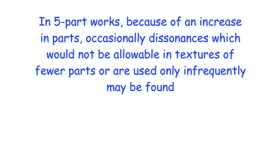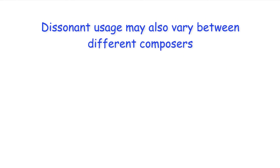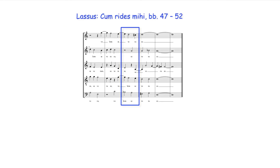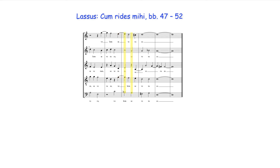In five-part works, because of an increase in parts, occasionally dissonances which would not be allowable in textures of fewer parts or are used only infrequently may be found. Dissonant usage may also vary between different composers. For example, Lassus here, to stagger these parallel fifths between the tenor and bass parts, sustains this G, allowing the tenor and bass to move as a series of 6-5 intervals. He then doubles the tenor line with the first cantus, thereby creating 4-3 suspensions but also forming momentary apparent second inversion chords on the bar's first and third quarter note beats.